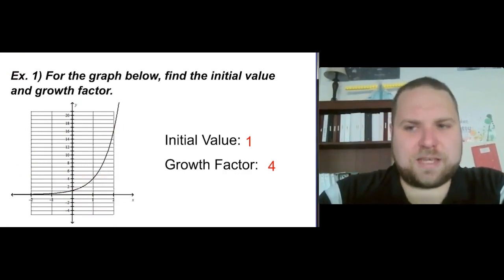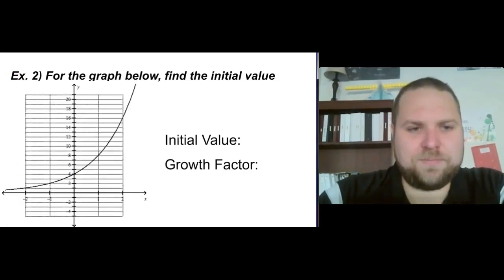So let's try that again with the second one to make sure we still know what we're doing. The initial value is going to be the y-intercept. So we look for where this thing crosses the y-axis. It crosses at 4. So that's my initial value.